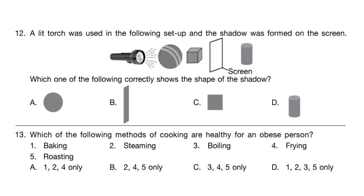Question 13: Which of the following methods of cooking are healthy for an obese person? Except frying, all other methods of cooking are healthy. So the correct answer is option D — methods 1, 2, 3, and 5 only.